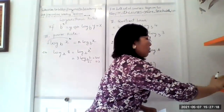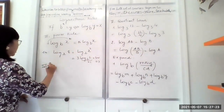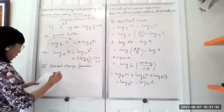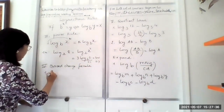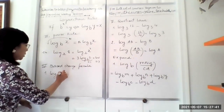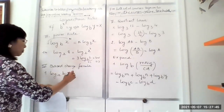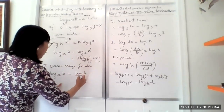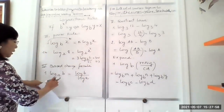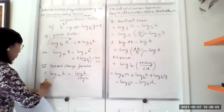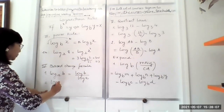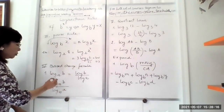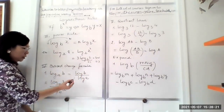Let's go to the next law, which is the base change formula. If you have log base A of B, you can rewrite it as log of B divided by log of A, where the log has a default base of 10. You can also write this as log base 10 of B divided by log base 10 of A. These are all equivalent. Because of this, we know that we can change the base for any log.